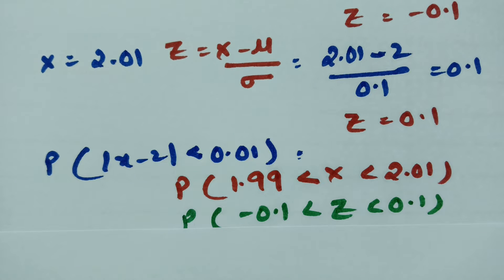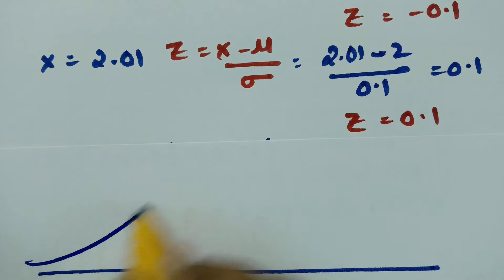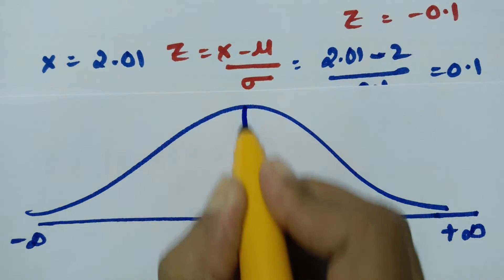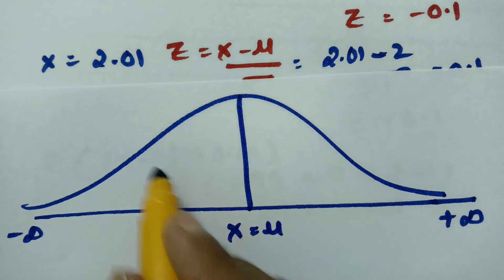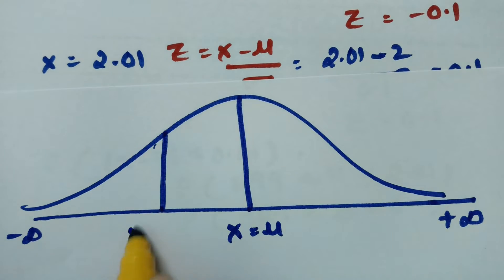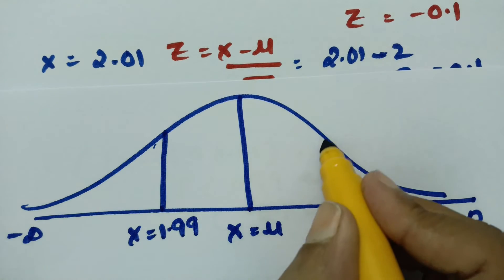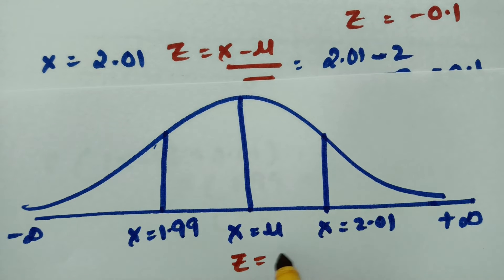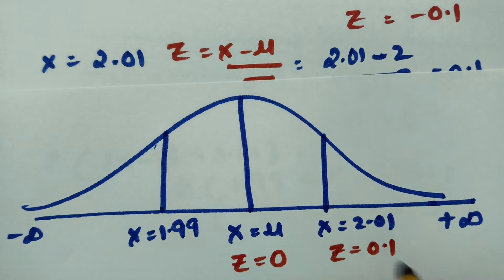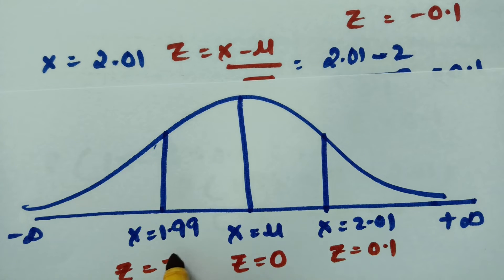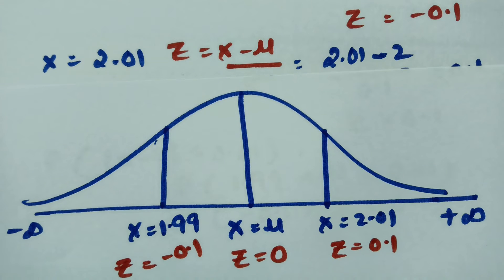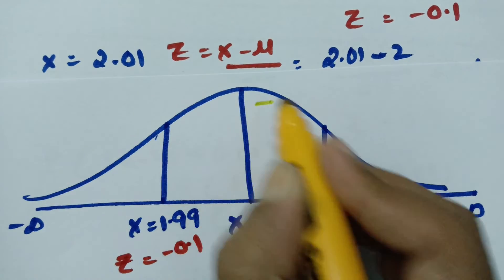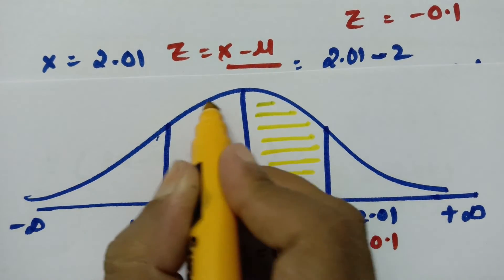The normal distribution curve tends to plus infinity and minus infinity. On this curve, x equals mu is at the center. We mark x equals 1.99 and x equals 2.01, which correspond to z equals minus 0.1 and z equals 0.1 respectively. The required area is the shaded region between these two points.